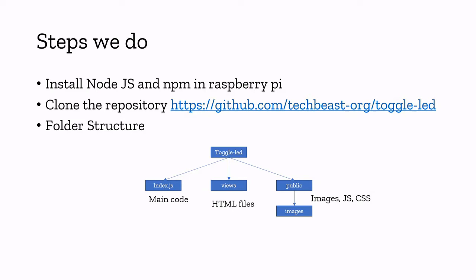The folder structure is: 'toggle-led' is the base folder, and index.js is our main JavaScript file containing all our logic. Under the views folder we have all our HTML files. The public folder has images, JavaScript, and CSS. In this program we are going to use one simple HTML page — index.html — one LED image, and in index.js we will write code for turning on and off our LED using the rpy-gpio npm module.